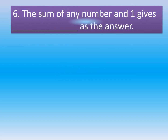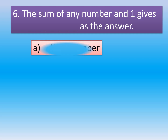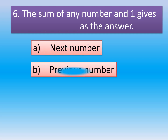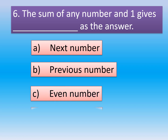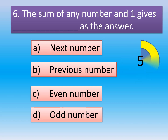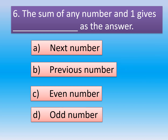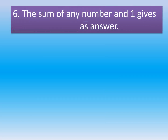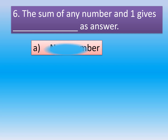Question 6: The sum of any number and one gives dash as answer. Option A: Next Number. Option B: Previous Number. Option C: Even Number. Option D: Odd Number. The correct option is Option A, Next Number. The sum of any number and one gives next number as answer.